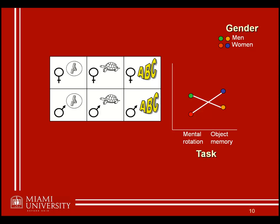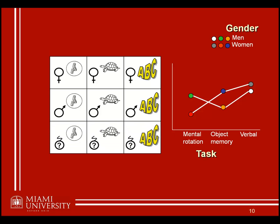In terms of the graph, adding another task would extend the lines to the right, adding another data point for both males and females — say, their performance on the verbal task. We can extend the design the other way as well: adding a third level of gender would add a third line to the graph, since different lines represent different levels of the gender factor, and points on each line represent performance across the different tasks.